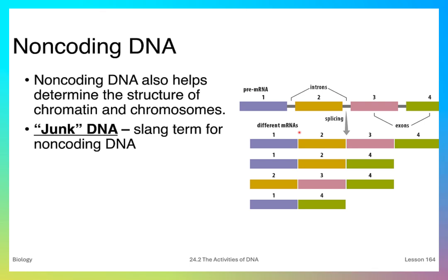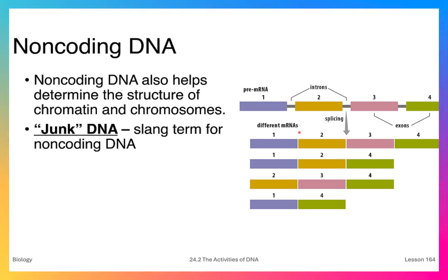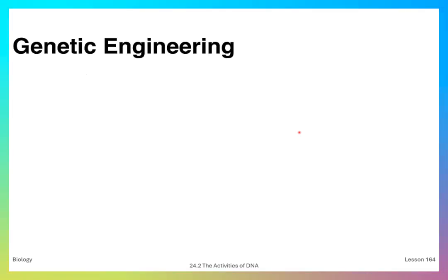In what I think is some hubris or arrogance, we tend to call DNA that doesn't code for any proteins 'junk DNA.' The truth is there are many important functions of this so-called junk DNA, and it's not really junk. Just because we can't figure out what its purpose is doesn't mean that it's junk. Genetic engineering is a process where genes are manipulated using techniques to artificially change DNA in order to improve the organism in some way.